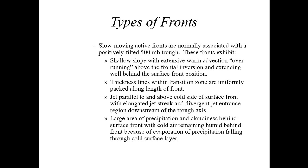We have to look at active fronts in two regards: slow-moving and fast-moving. The speed of a front is dependent on the tilt of the trough in the mid-levels and the orientation of the mid-level winds in relation to the surface front. If the jet stream is parallel to and above the cold side of the surface front, this is going to result in a slow-moving active cold front. As a result, you're going to have a large area of precipitation and clouds behind the surface cold front.